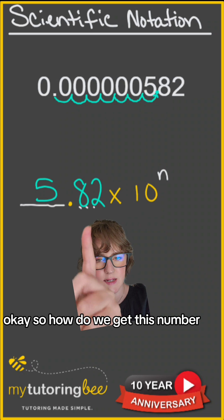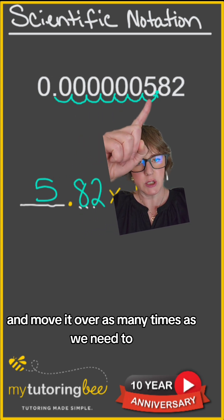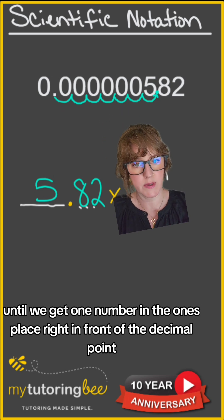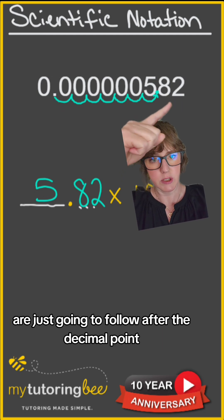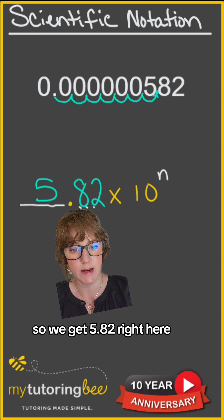So how do we get this number? We're going to take this decimal point and move it over as many times as we need to until we get one number in the ones place, right in front of the decimal point, and then any of the other numbers follow after that decimal point. So we get 5.82 right here.